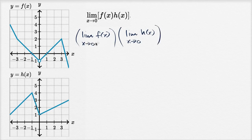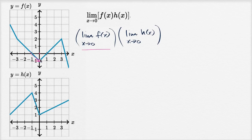Let's think about what each of these are. For f(x) as x approaches zero, the function itself isn't defined there, but when we approach from the left, the function seems to be approaching negative one. And as we approach from the right, the function also seems to be approaching negative one. So this limit is negative one.